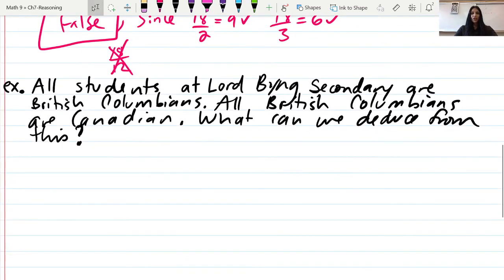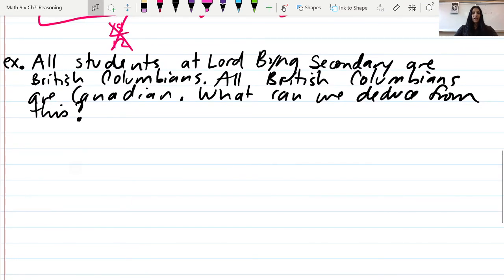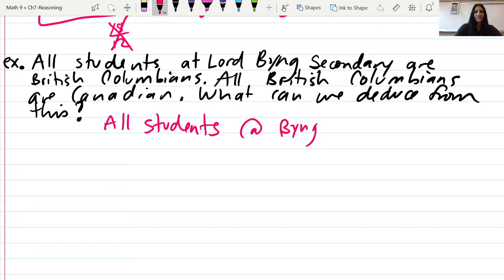Next one: All students at Lord Byng Secondary are British Columbians. All British Columbians are Canadian. What can we deduce? If all students at Byng are British Columbians and all British Columbians are Canadian, we could say all students at Byng are Canadian.